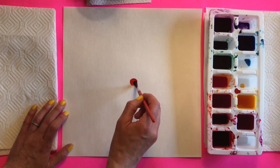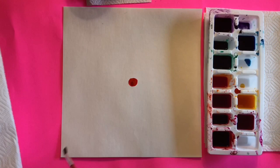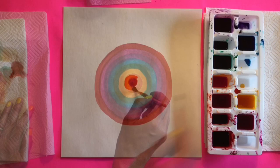Starting with red, paint a small circle where you marked your center. Make sure you clean your brush between colors and squeeze with a paper towel so colors don't mix in the tray. Then paint orange around the red. It's okay if the colors blend a little as you paint.